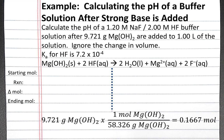To calculate how many moles of magnesium hydroxide we have, we convert grams of magnesium hydroxide into moles using dimensional analysis. The molar mass is 58.326 grams per mole, and we find that we have 0.1667 moles of magnesium hydroxide.